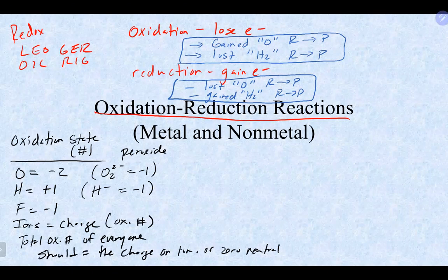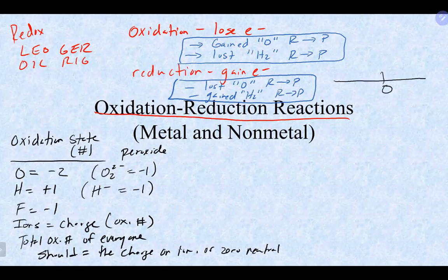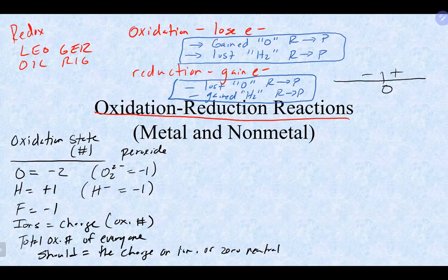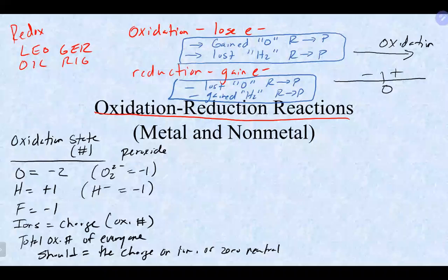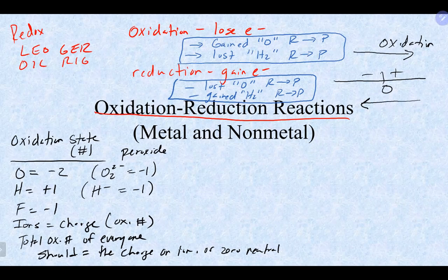A simple number line approach helps determine what is oxidized or reduced. When something loses electrons, it becomes more positive — if the oxidation number moves in the positive direction from left to right in the reaction, it is going through oxidation. When something gains electrons, it becomes more negative — if the oxidation number moves in the negative direction, it is going through reduction.